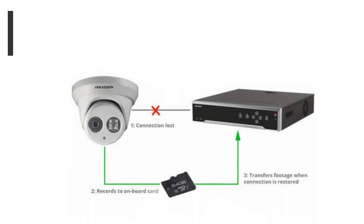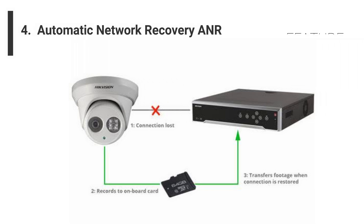The fourth feature of a security camera is automatic network recovery. Some cameras have the feature that you can install a memory or SD card inside them. This helps if the NVR or system fails — the camera starts recording to that memory card. When the system returns or recovers, it will send all the footage and recordings back to the NVR system.